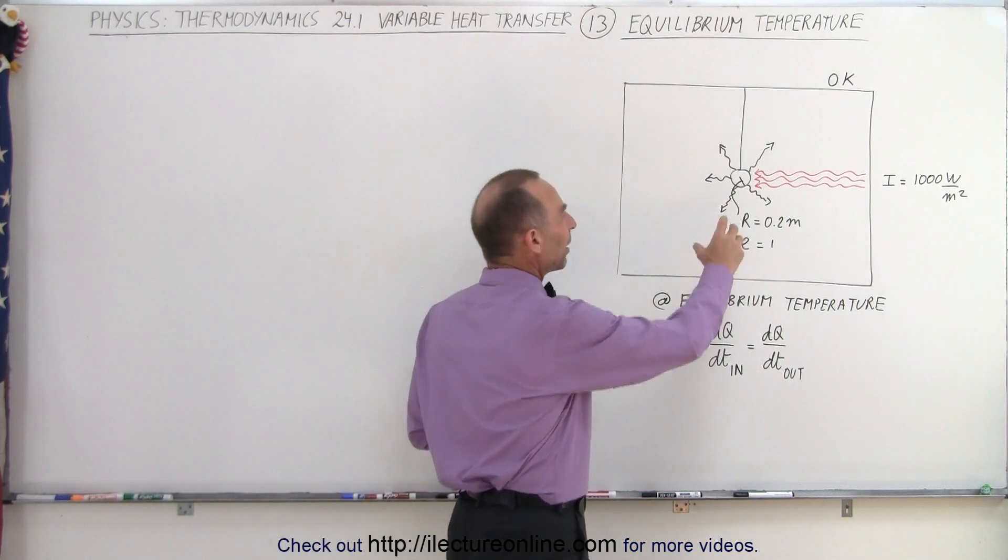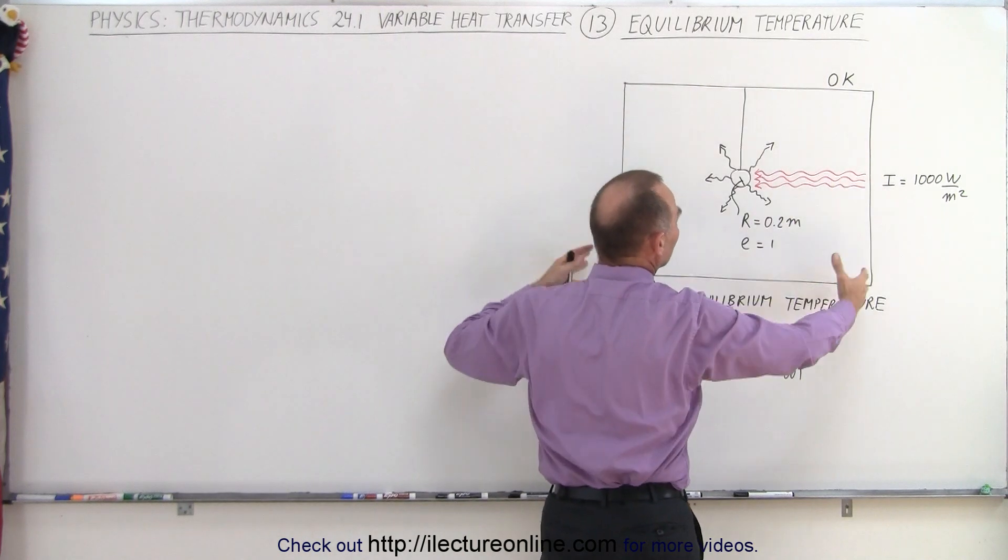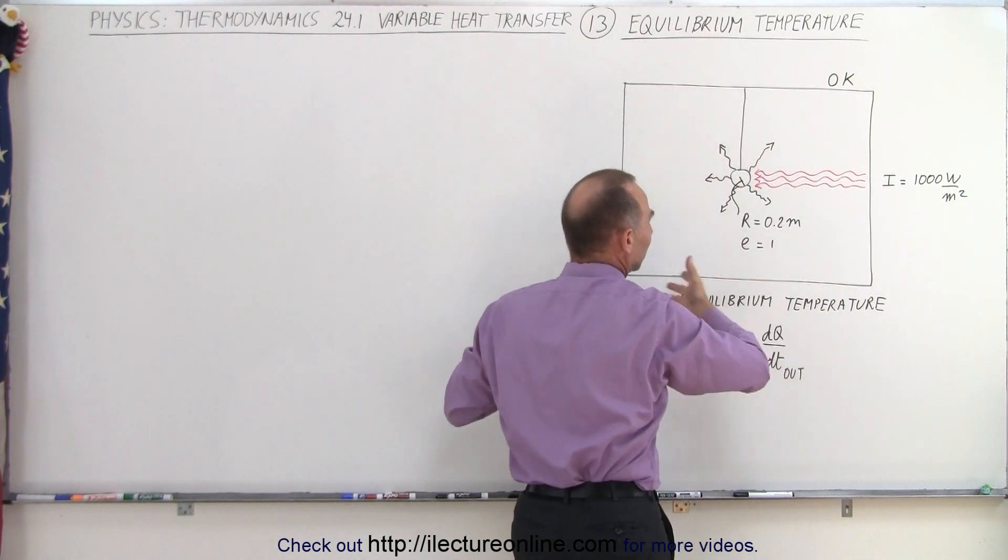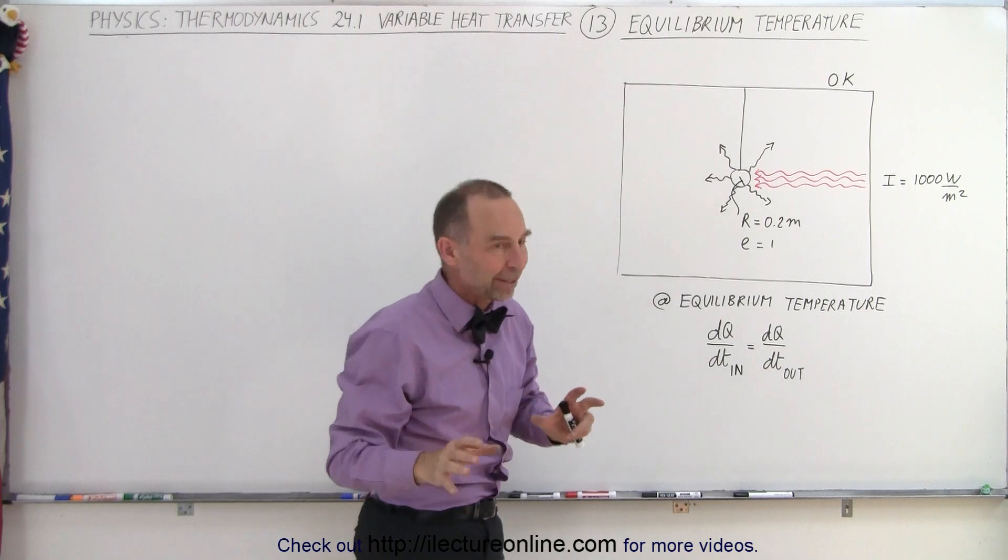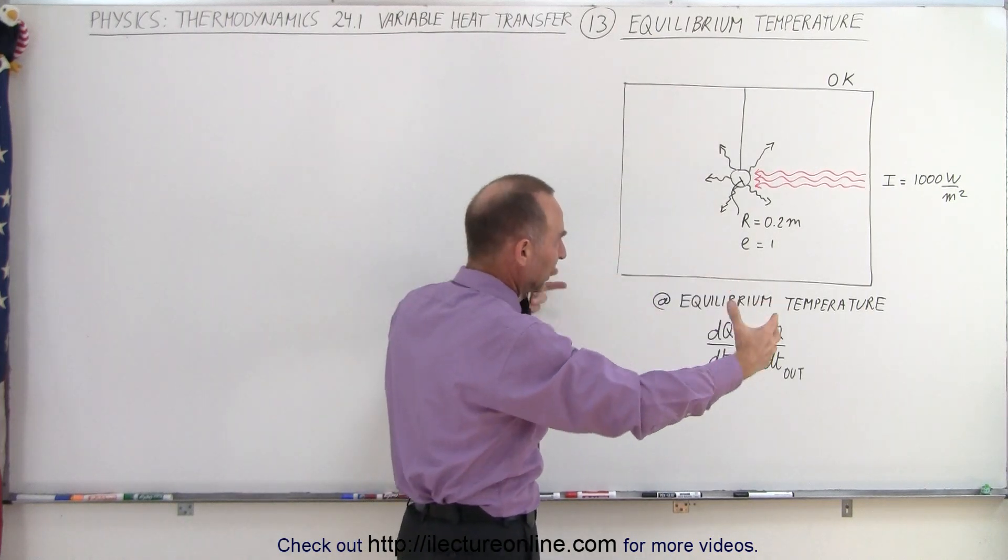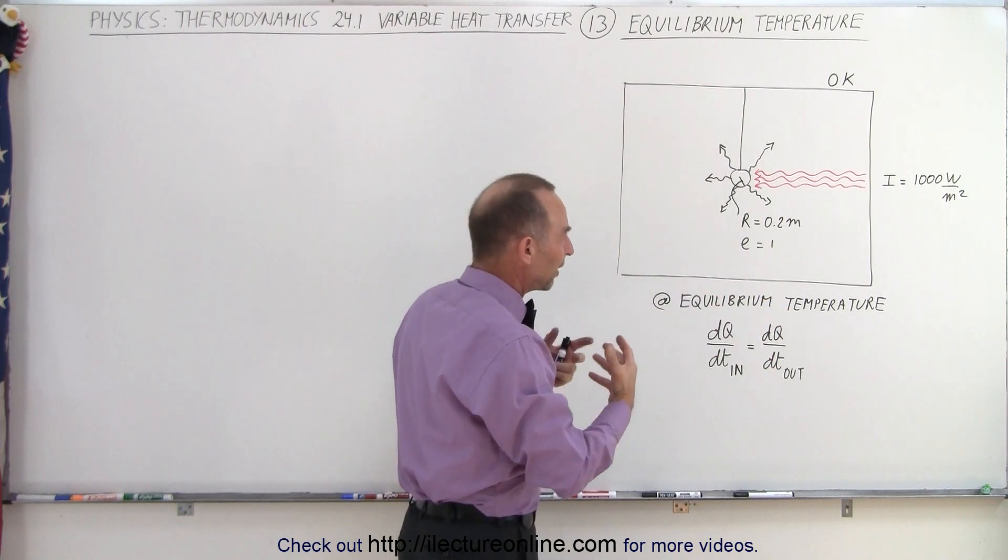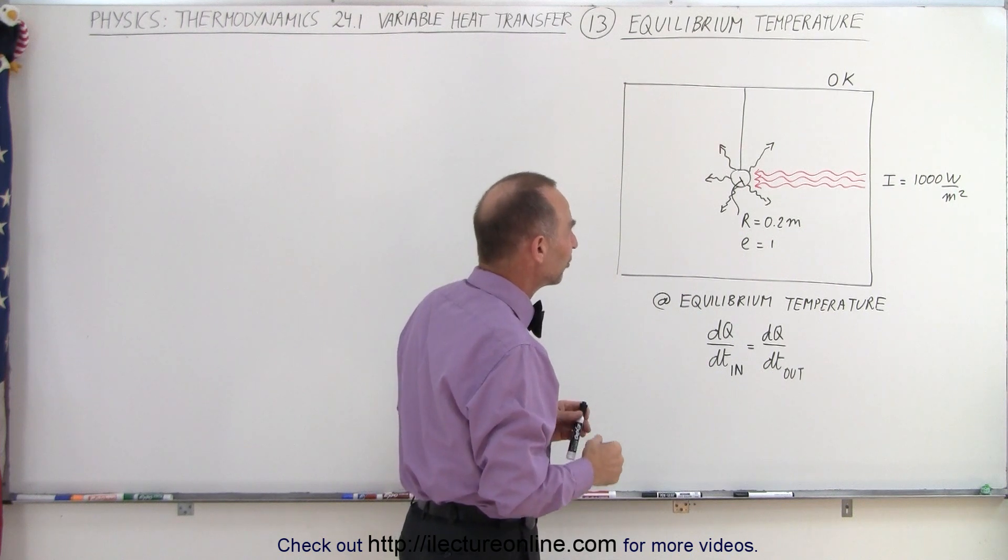Let's say we had an object hanging inside an enclosure where the surface of the enclosure is kept at zero Kelvin. That's a very hypothetical situation. Think about being out in space where the temperature of space is close to near zero.